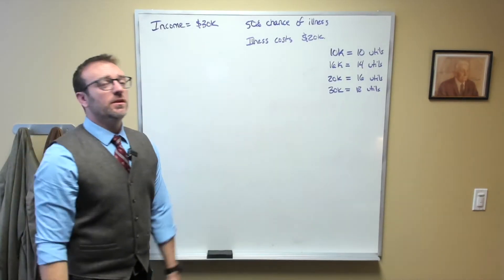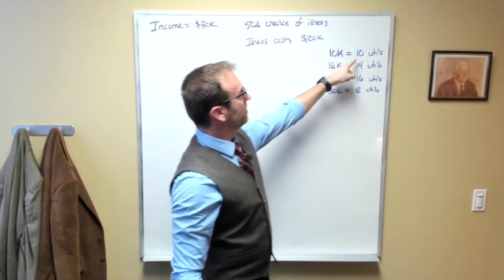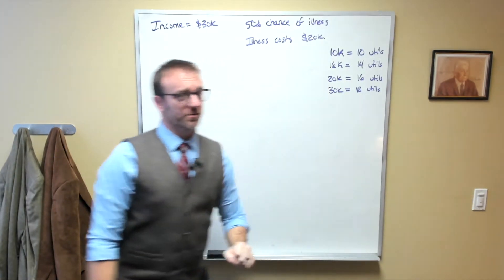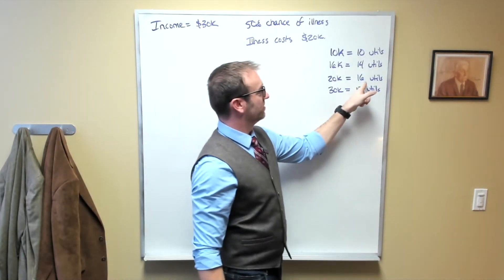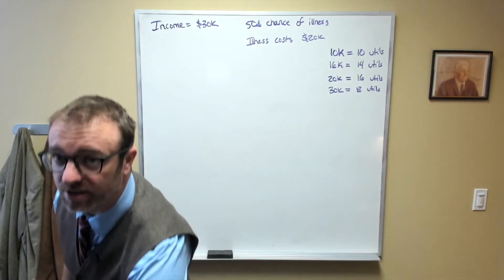So what we can see here is that going from $10,000 to $20,000 would be an increase of 6 utils. Going from $20,000 to $30,000, however, is only an increase of 2. So this exhibits diminishing marginal utility of income.